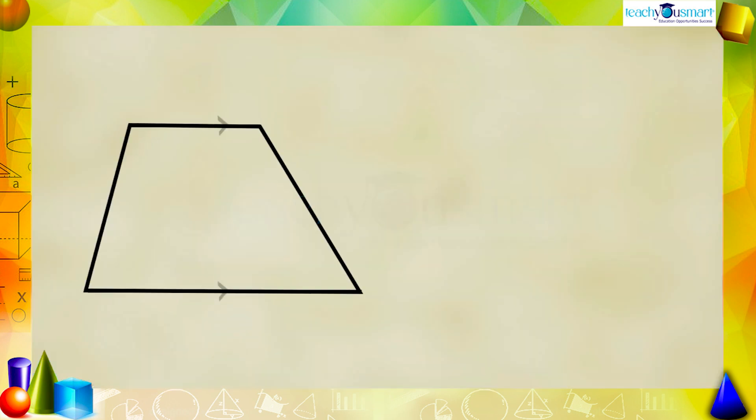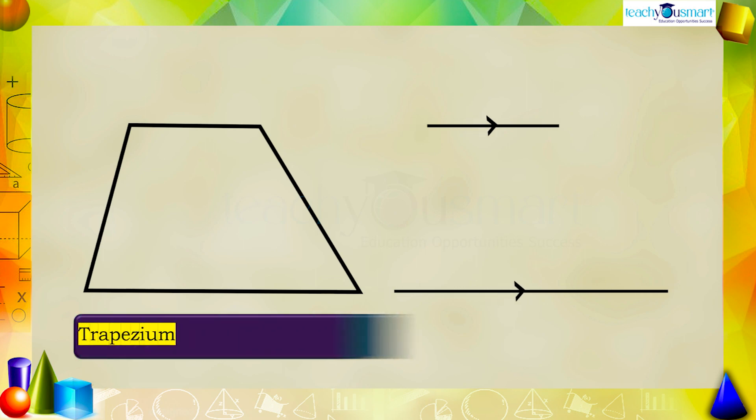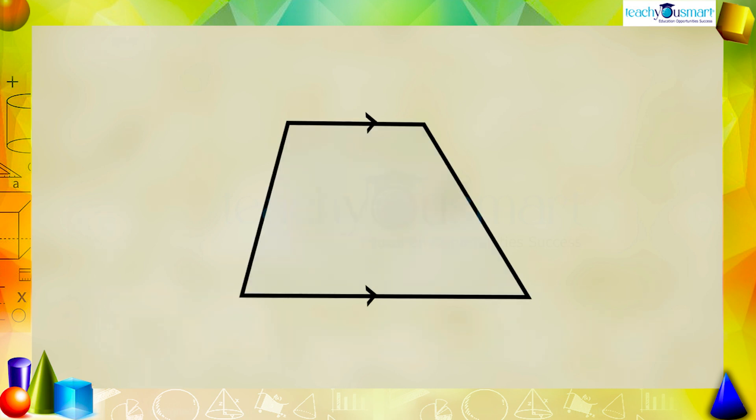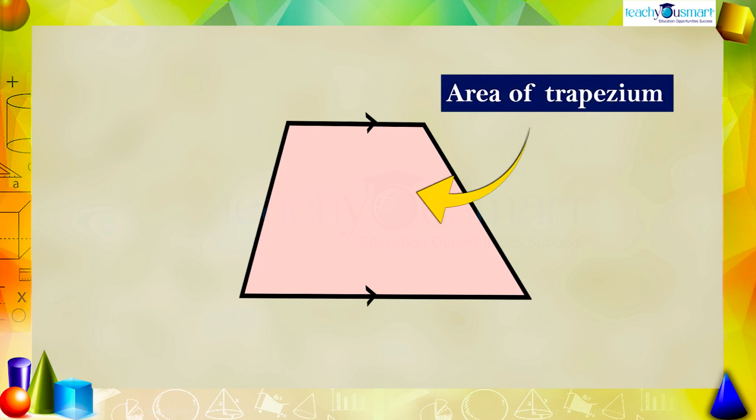In this quadrilateral we can see that a pair of opposite sides are parallel and named a trapezium. A trapezium is a quadrilateral with a pair of parallel sides. Since it is a closed plane figure it has an area, but how can we find it?